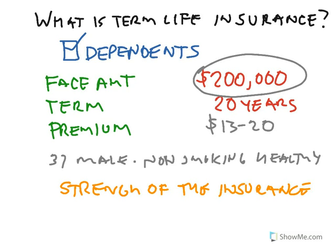That's a basic explanation of term life insurance. If you do have dependents and you don't have any insurance in place, I'd encourage you to get some quotes. Make sure you take into consideration the strength of the insurance company you're buying from, as well as the cost. Thanks for watching. I'm Spencer Liu, The Finance Guy.